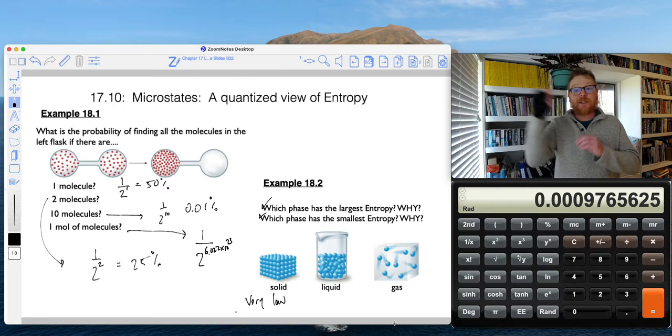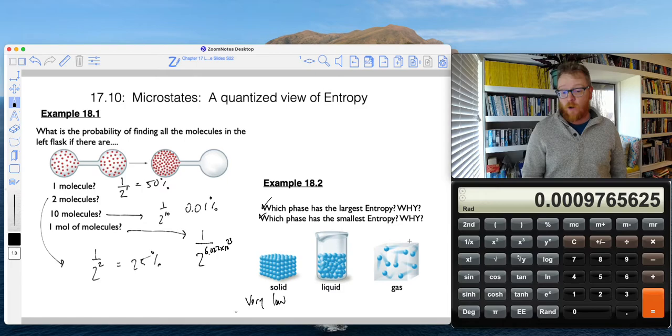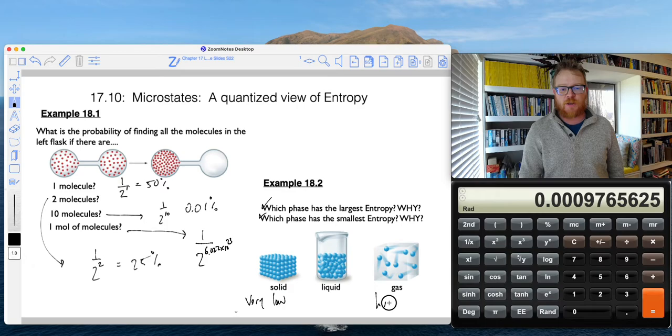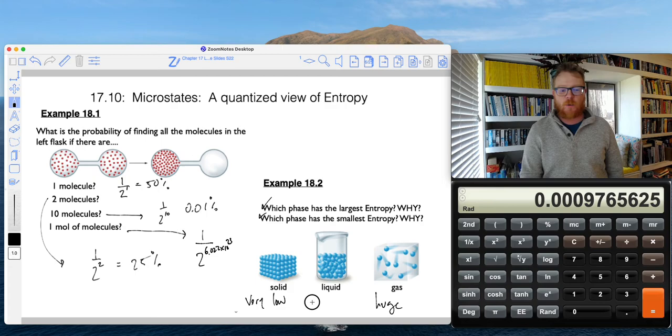But in a gas, because now these molecules can move all around, kind of like how we've been talking about in this bulb, in the flask thought experiment, there is a huge amount of entropy in a gas. And of course, in a liquid, I'll just put that like in the middle, but we recognize a liquid is going to have more entropy than a solid, and a gas is going to have more entropy than a liquid. More on this in the next videos.